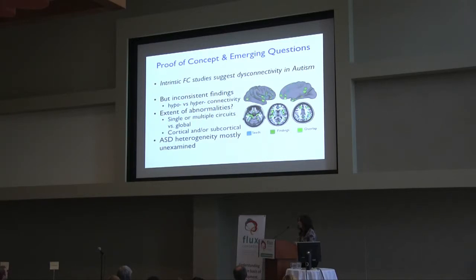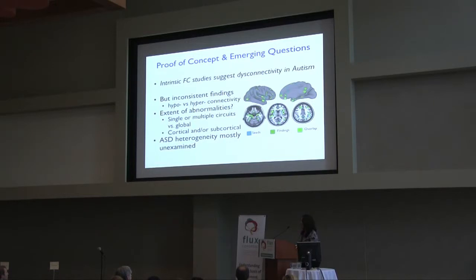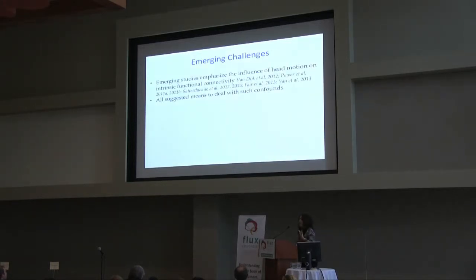There is still a question about the extent of the abnormality — some say it's mostly limited to social circuits, others say it's widespread across all cortical and subcortical circuits. A big challenge the field faces, not just in autism but across psychiatry, is the vast clinical and likely biological heterogeneity of samples.